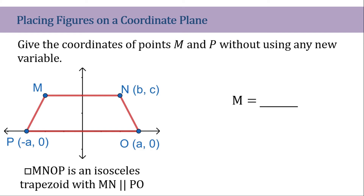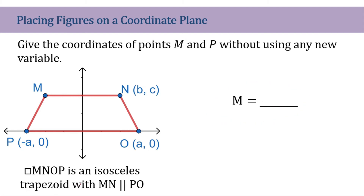We are asked to find the coordinate of M. This is an isosceles trapezoid, meaning certain sides and angles are congruent to each other, and the two bases are parallel to each other. To find the coordinates of M, our basis is this point. Since the Y coordinate here is C, the Y coordinate of M should also be C, because they are in the same straight line and share the same Y coordinate.